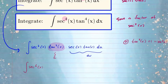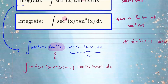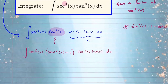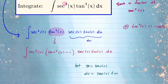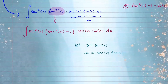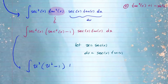Let's rewrite tangent squared in terms of secant. We have the integral of secant squared of x, and tangent squared of x becomes secant squared of x minus one, times secant x times tangent x dx. Now I'm ready to make my substitution. Let u equal secant of x; then du equals secant x tangent x dx — which is exactly what we wanted. So my entire integral becomes the integral of u squared times (u squared minus one) du.